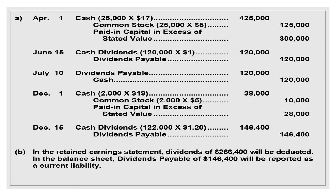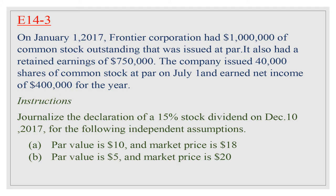Regarding part (b): In the retained earnings statement, dividends of $266,400 — the total of $120,000 plus $146,400 — will be deducted. In the balance sheet, Dividends Payable of $146,400 will be reported as a current liability.